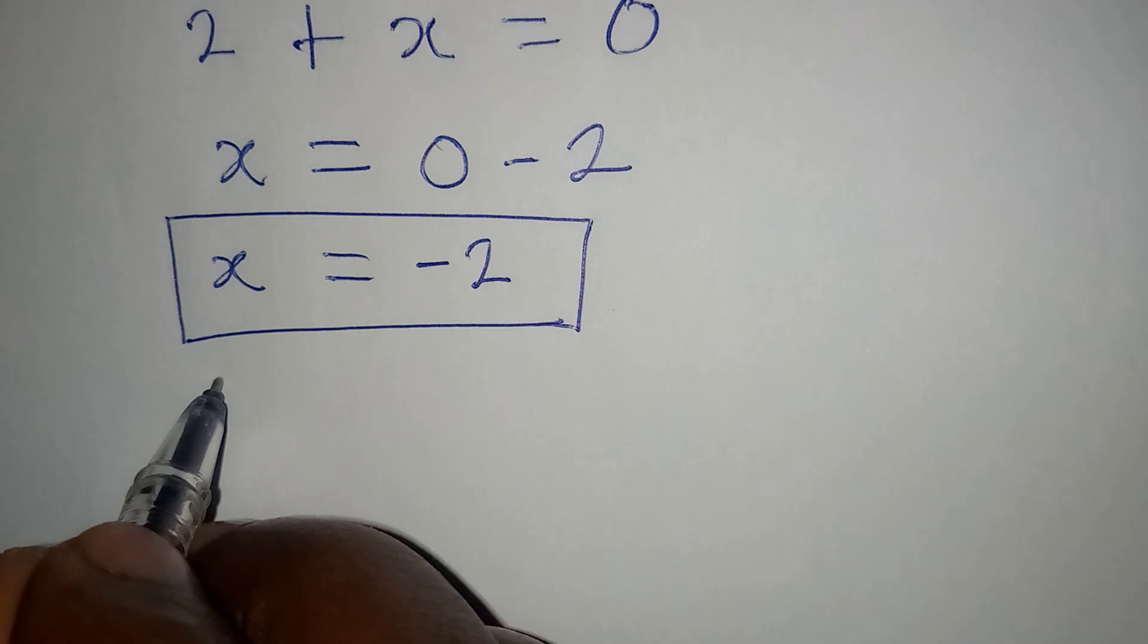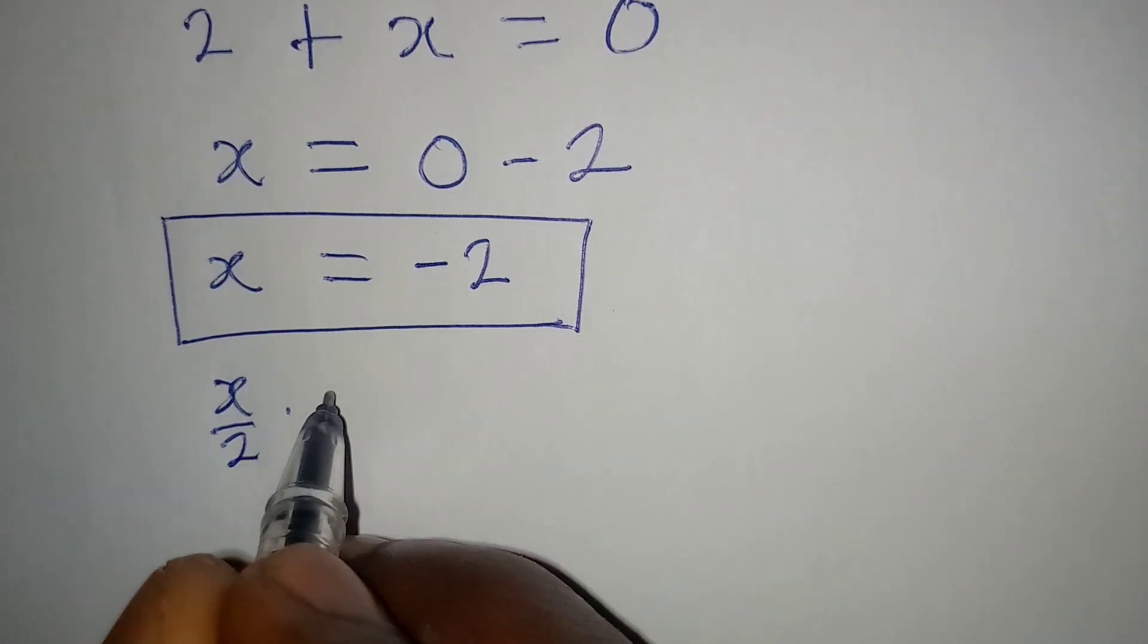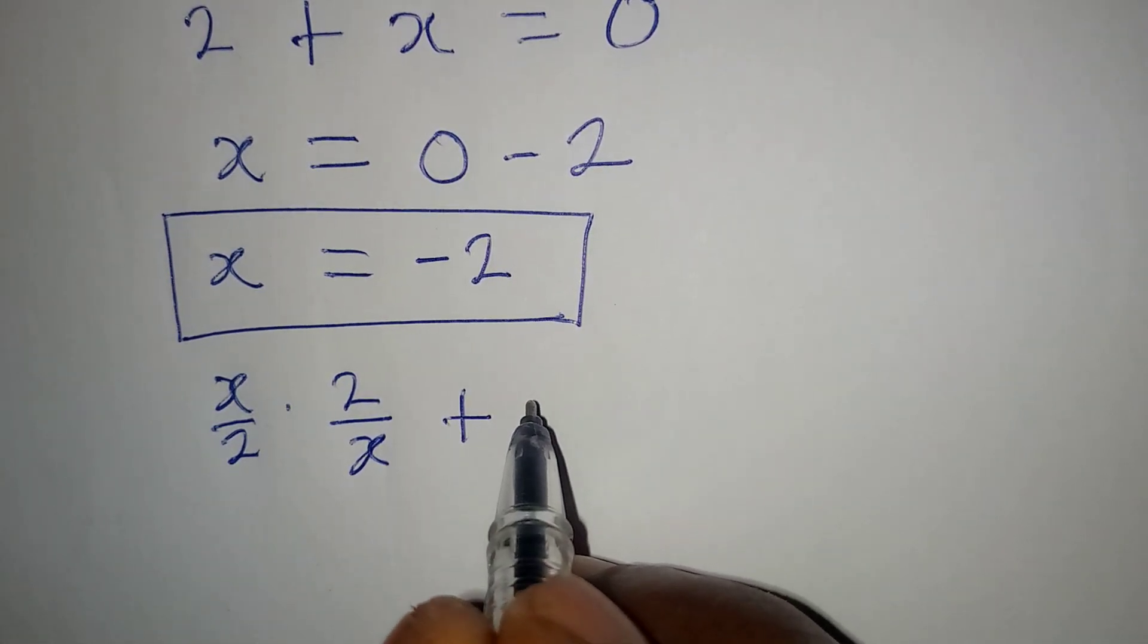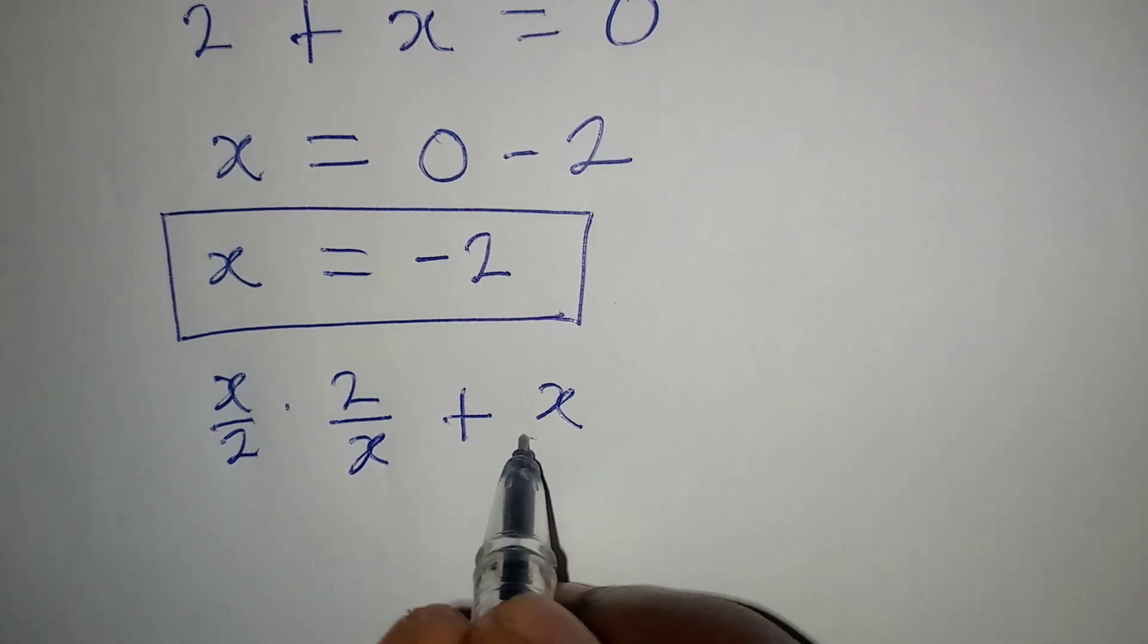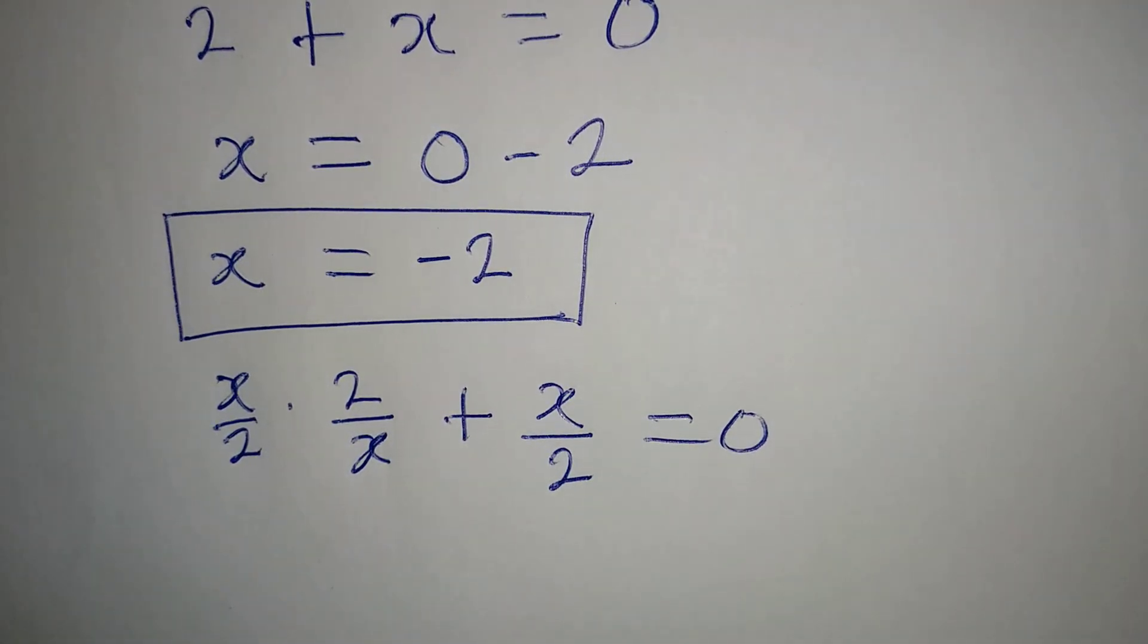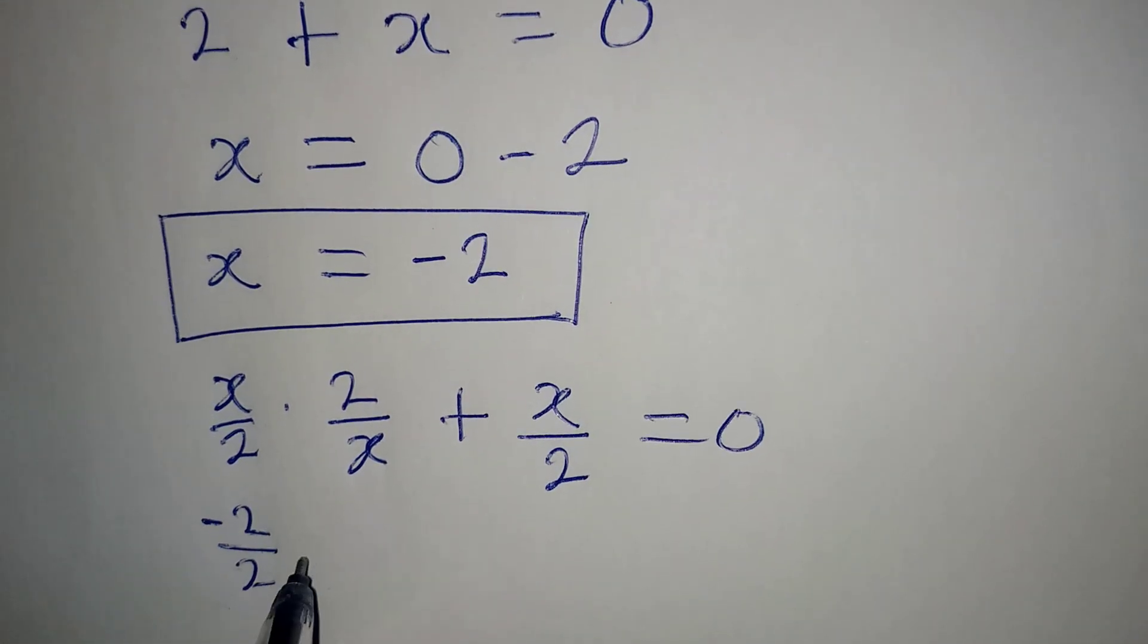Now let us put it back and check. We had x over 2 multiply by 2 over x plus x over 2 equal to 0. Now let me put in the value of x as minus 2.